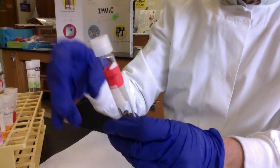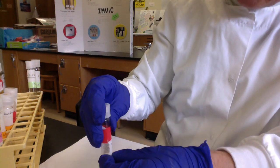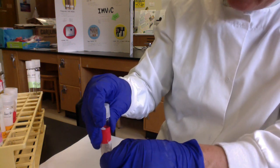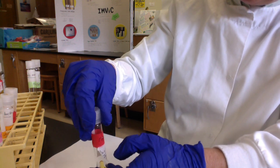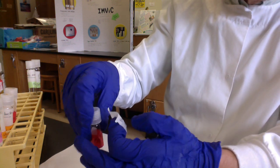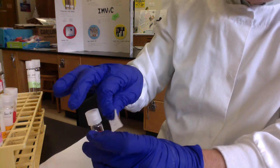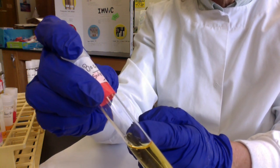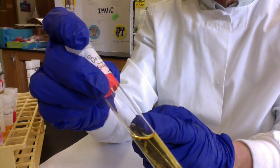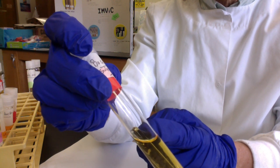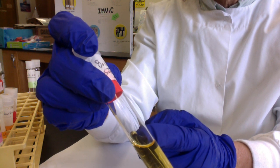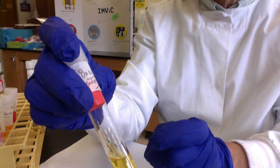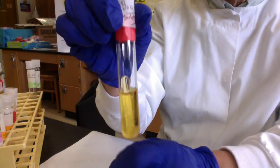This tube is Bacillus subtilis in sucrose. Bacillus subtilis makes sucrase because it's fermenting the sucrose. But there's no gas bubble. When Bacillus subtilis ferments sucrose, it doesn't make molecular hydrogen or CO2. We would score this A/- for acid but no gas—they use different fermentation pathways.